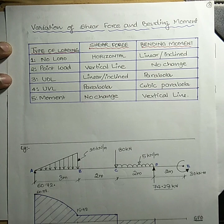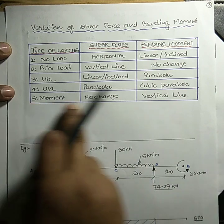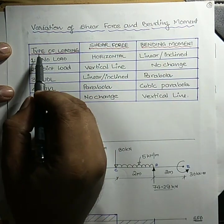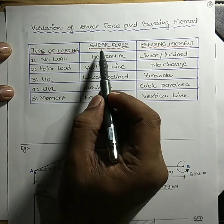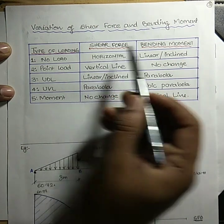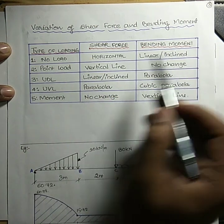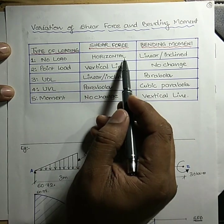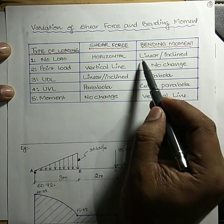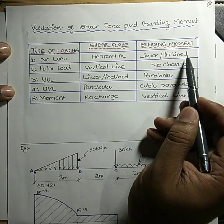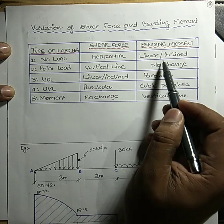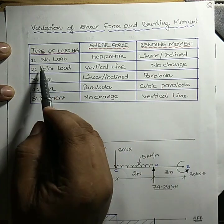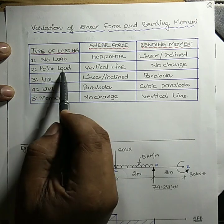Next is the variation of shear force and bending moment. In a tabular column: type of loading, how the shear force varies, and how the bending moment varies. If there is no load, shear force will be a horizontal line whereas bending moment will be a linear inclined straight line. If the loading is a point load, shear force will be a vertical line and bending moment will have no change.